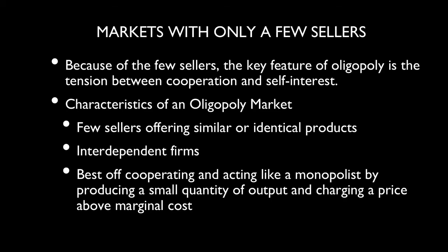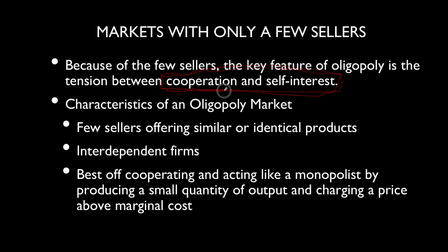When you have only a few sellers, the key feature is the tension that exists between competition and self-interest, or cooperation and self-interest. Are the firms better off trying to act in concert with one another, or are they better off trying to do what's best for themselves? The characteristics of an oligopoly are a few firms selling similar products that are interdependent.